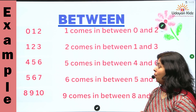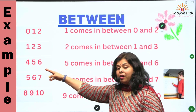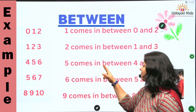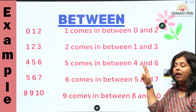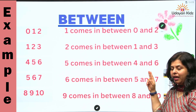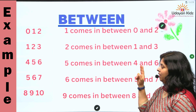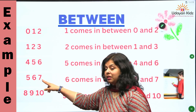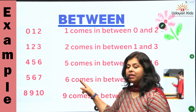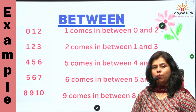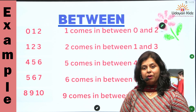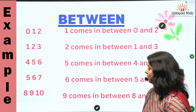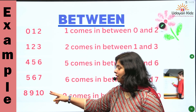Next, where does number five come? Five comes in between four and six. Next, where does number six come? Number six comes between number five and number seven.